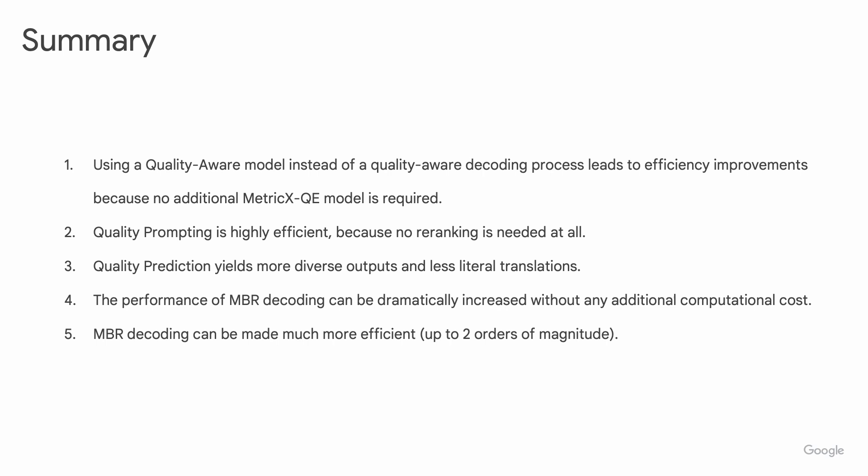To summarize: using a quality-aware model instead of only a quality-aware decoding process leads to efficiency improvements because no additional MetricX QE model is required. Quality prompting is highly efficient, requiring no re-ranking at all. Quality prediction yields more diverse outputs and less literal translations. Moreover, the performance of MBR decoding can be dramatically increased without any additional computational cost, making it up to two orders of magnitude more efficient.